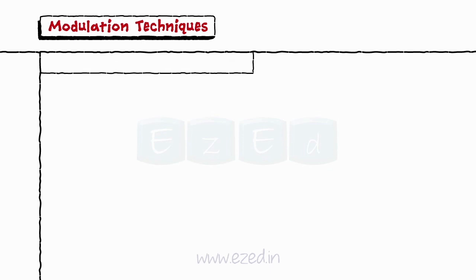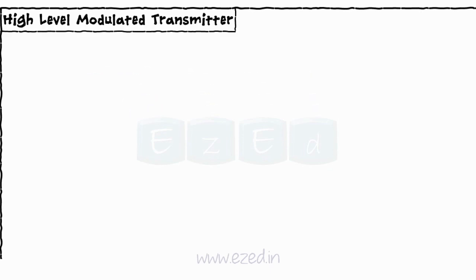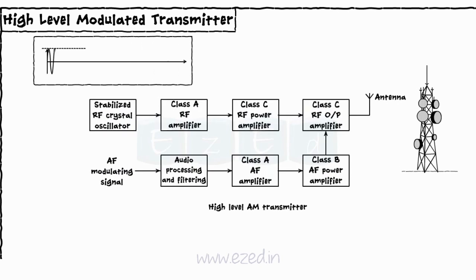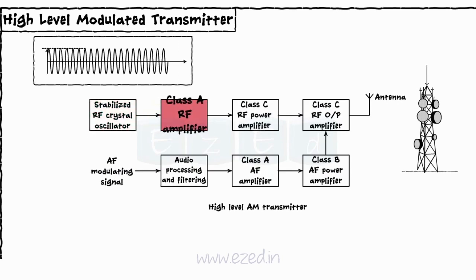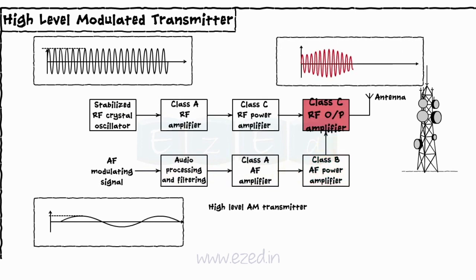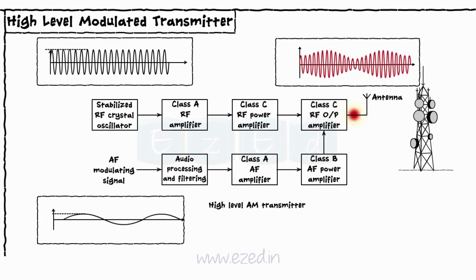We will first see the high level modulated transmitter. Its block diagram is as shown. Here, the crystal oscillator generates the carrier signal, which is then amplified by a class C power amplifier. The modulating signal is also amplified to a higher power level before modulation. The modulation takes place in the last class C power amplifier, and the modulated output is an AM wave, which is transmitted directly.